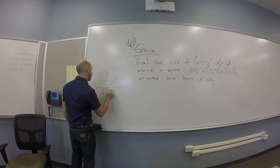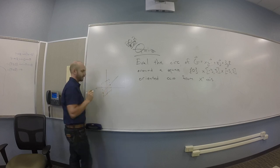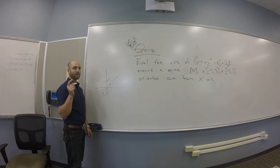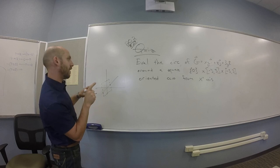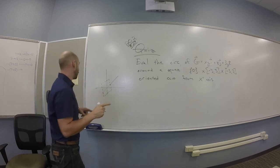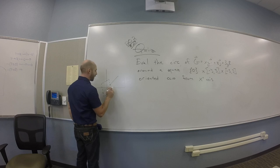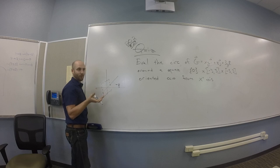So picture something like this, and I'm supposed to calculate the circulation around this thing, right? When viewed, let's see, counterclockwise orientation from the positive x-axis. So if I stand out here and look that way, should be counterclockwise, which would be like that.